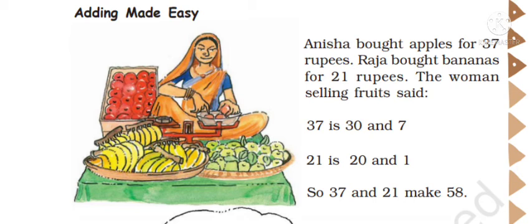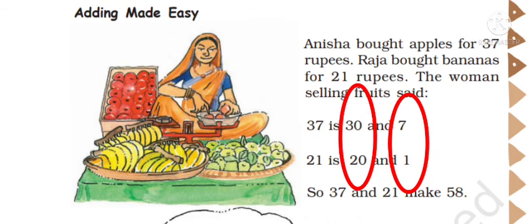Did you understand how this woman added? First she split number 37 as 30 and 7, then she split 21 as 20 and 1. Then she added 30 plus 20 is 50, 7 plus 1 is 8. 50 plus 8 is 58.